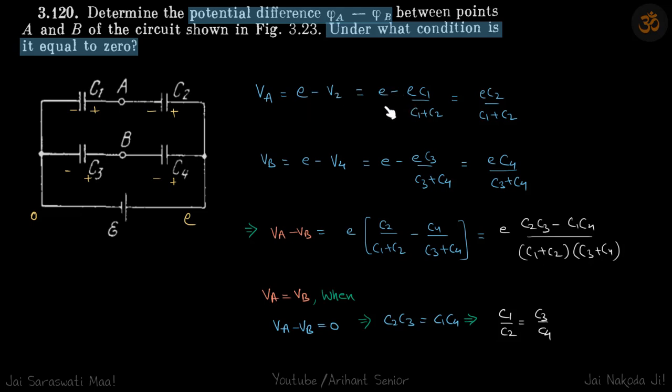So this VA becomes E minus V2, which is this. Similarly, VB equals E minus V4, and V4 is E times C3 by C3 plus C4, which gives E C4 by C3 plus C4.